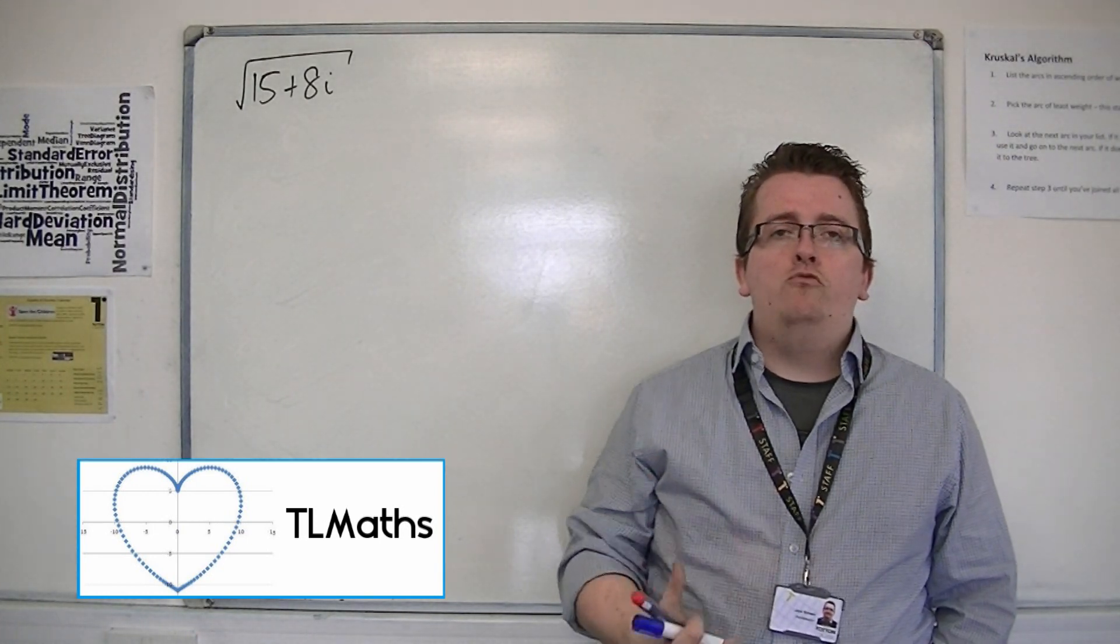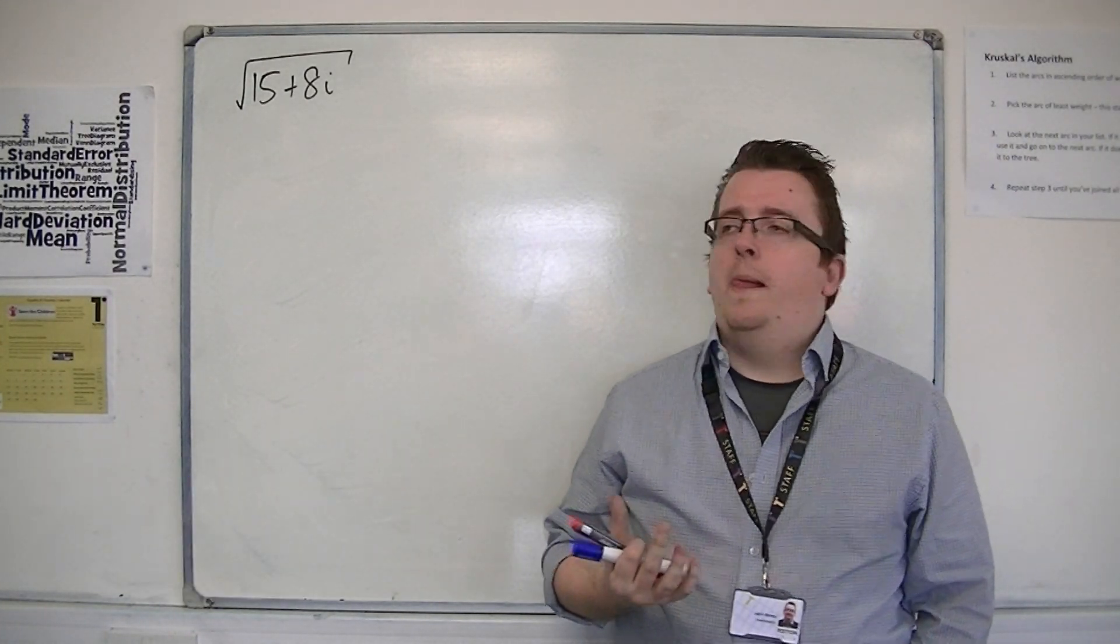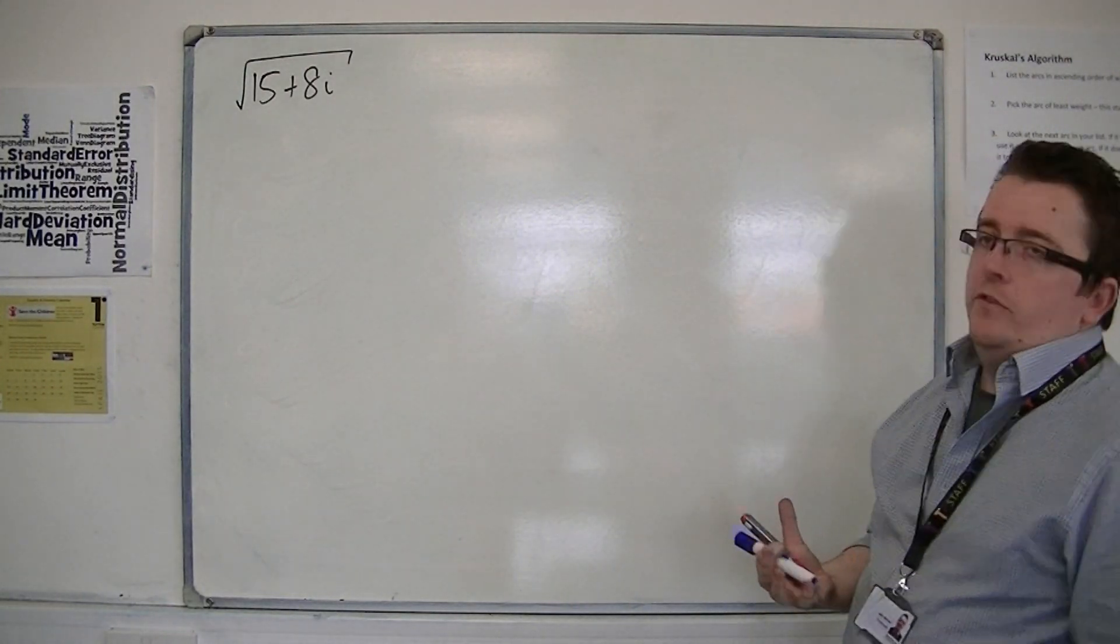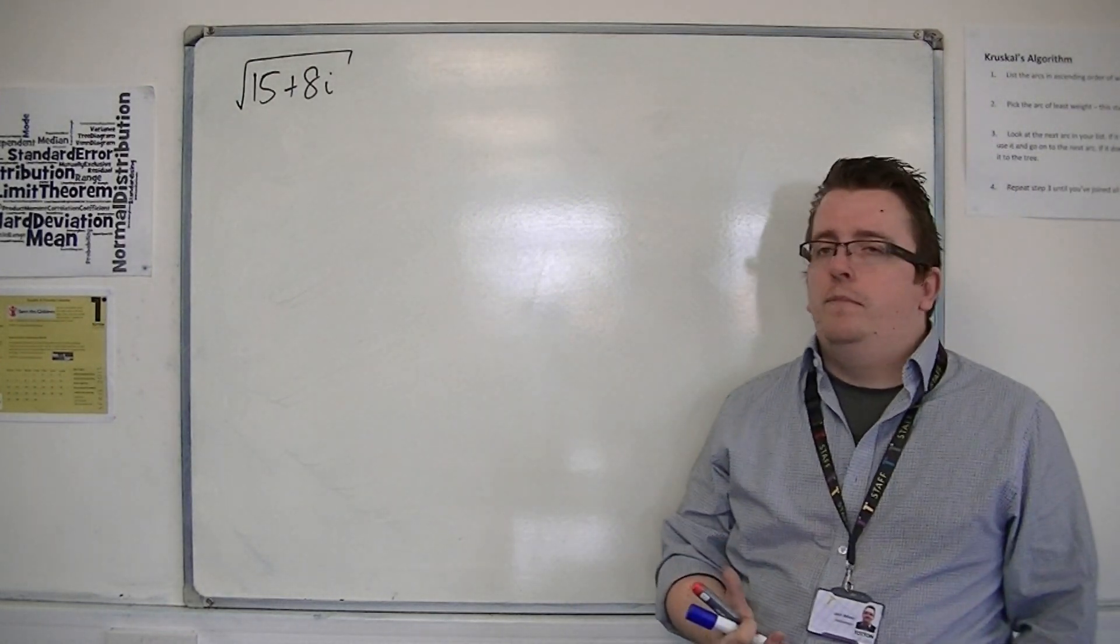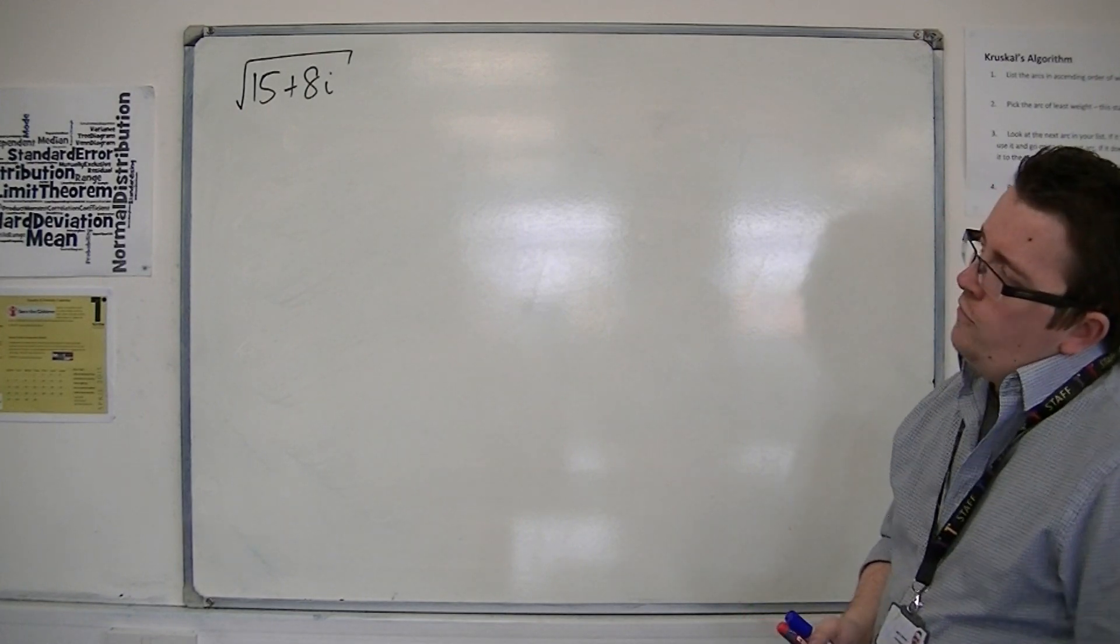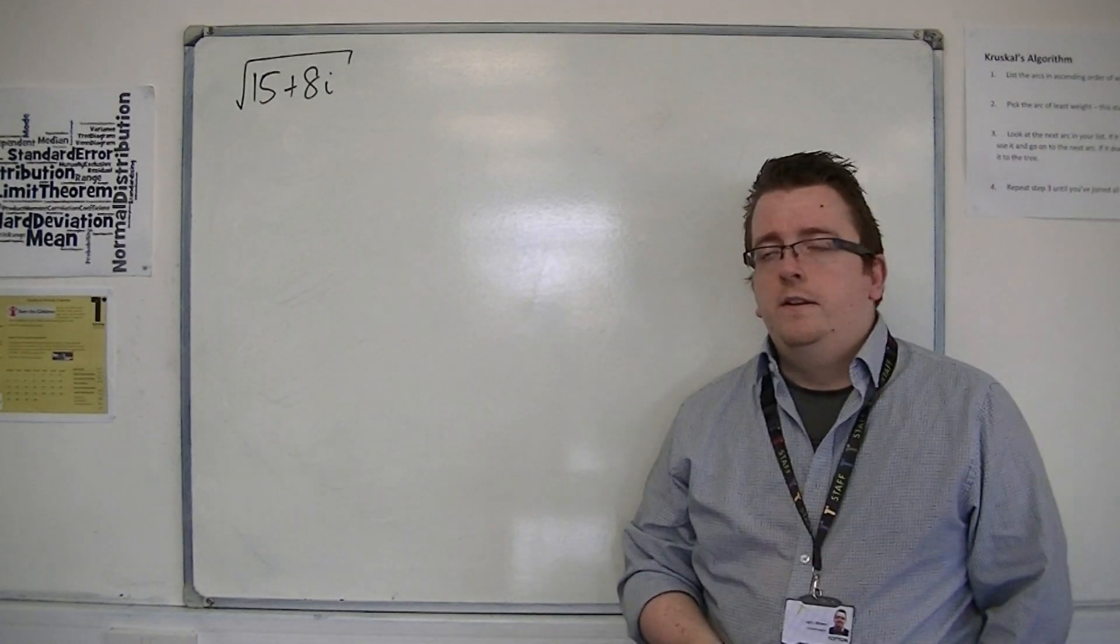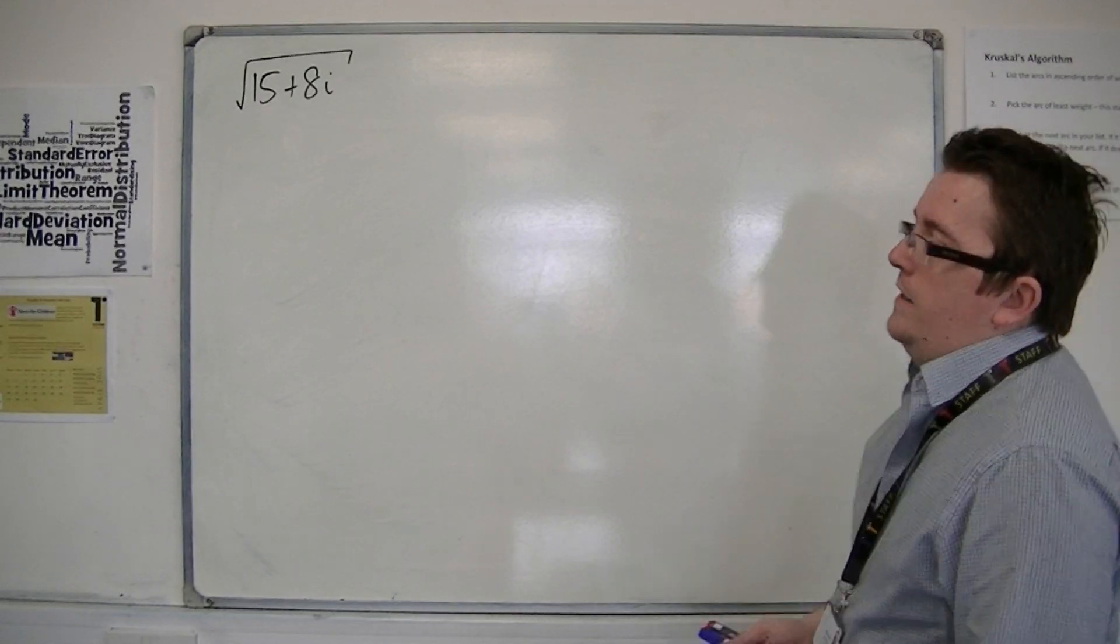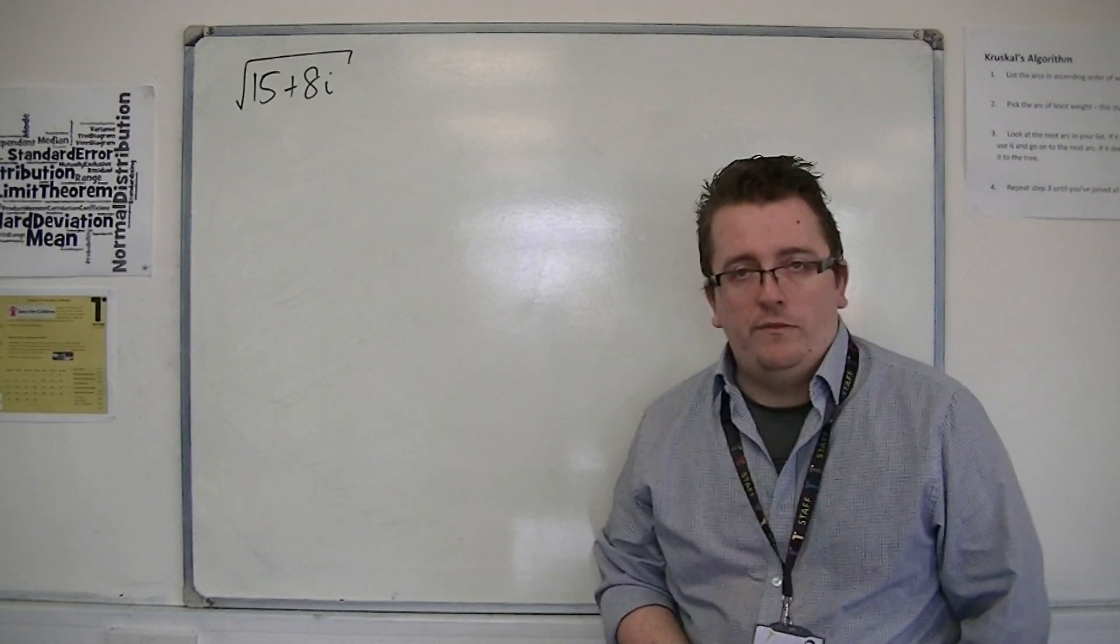Let's say we've been asked to square root a complex number. This seems a little bit of a strange thing to do, and not a very easy thing to do either. So if we wanted to square root 15 plus 8i, it doesn't seem immediately obvious as to how you would go about that.